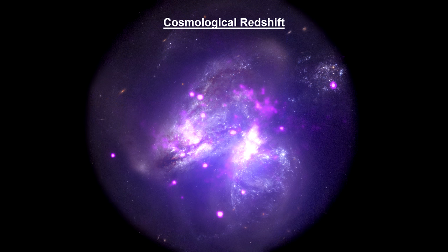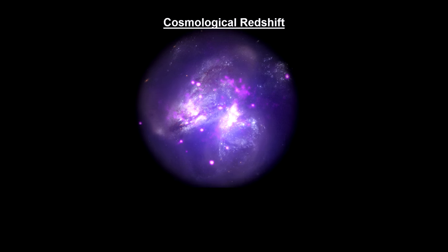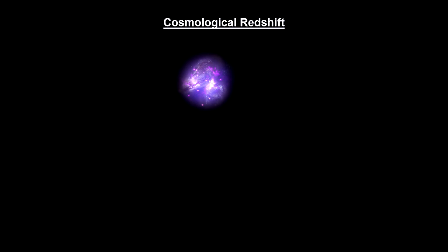When we observe light from distant galaxies, we are seeing the light from the stars in those galaxies, and that light has absorption lines.